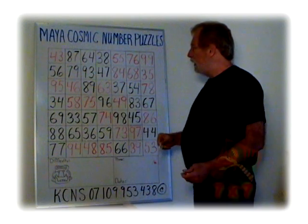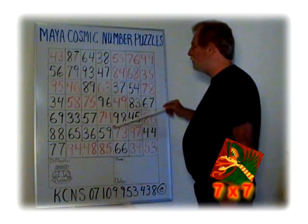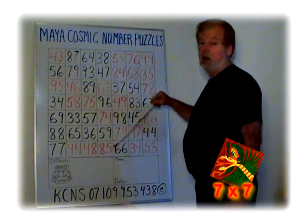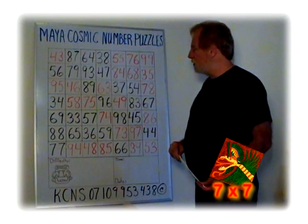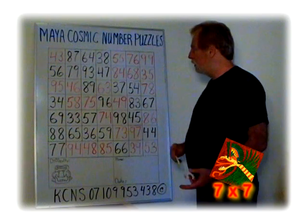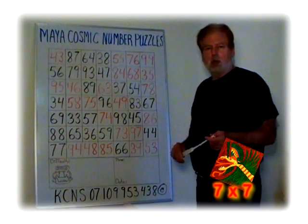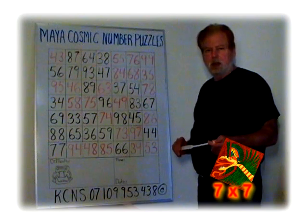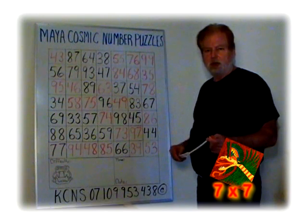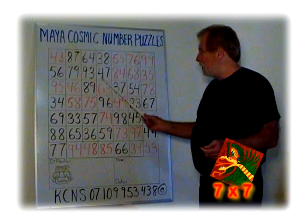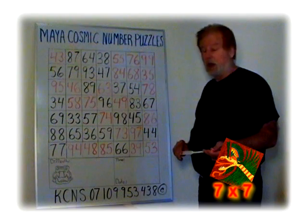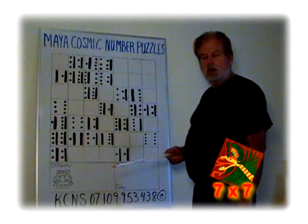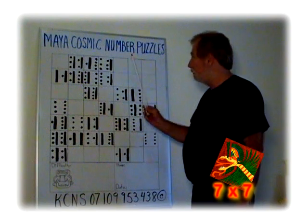What we're going to do today is we're going to change these Arabic numbers into Mayan numbers, and then we're going to solve the puzzle. So we wanted you to see the numbers first in Arabic. These puzzles were originally found in the Mayan Pyramids in southern Mexico in the late 1940s of the last century. We're going to change these numbers into Mayan numbers and try to solve the puzzle. Today I want to show you how to play the Mayan Cosmic Number Puzzles.